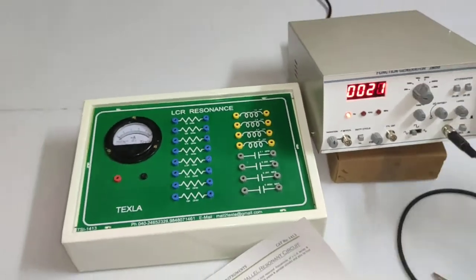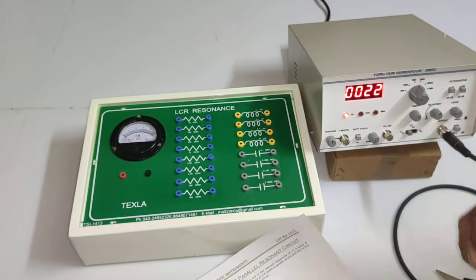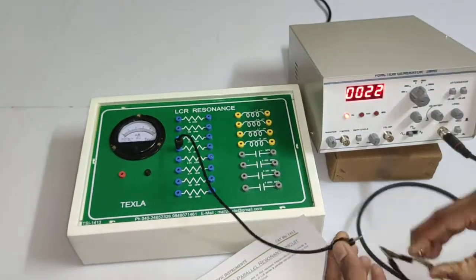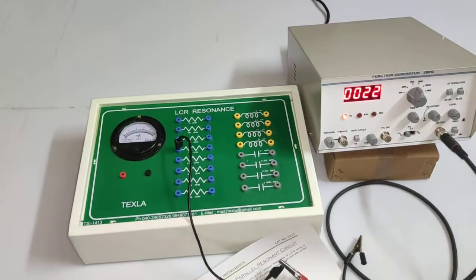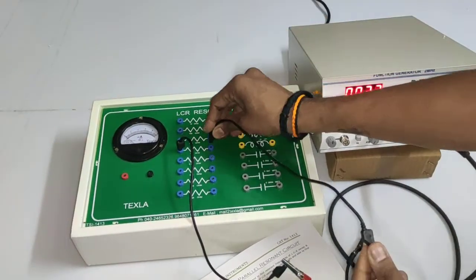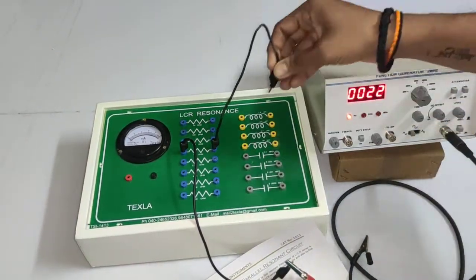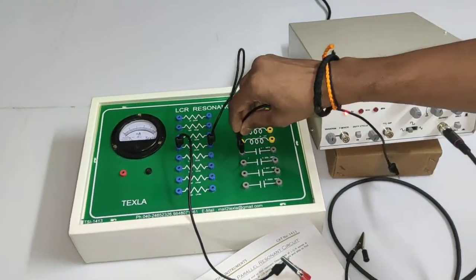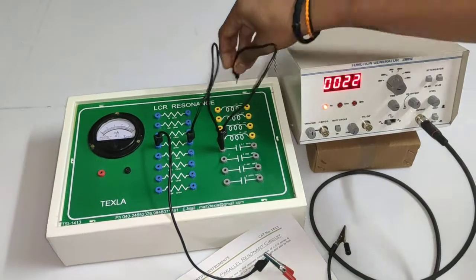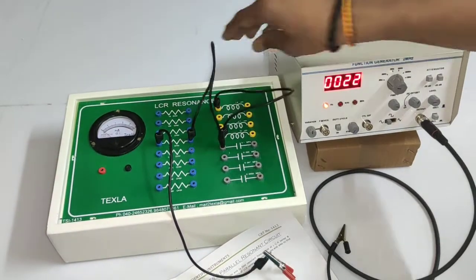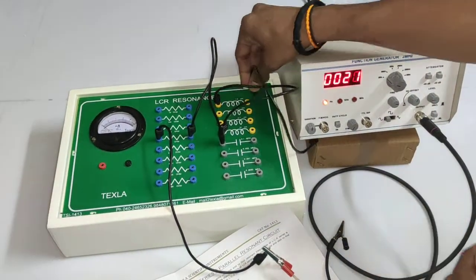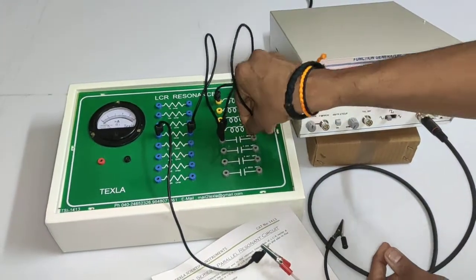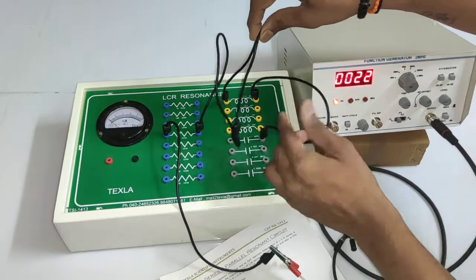So here from positive of the function generator to 1 kilo hertz, function positive is given, then it is given to parallel. So I am giving to capacitance, from here I am giving connection for inductance. So one connection is done, then same parallel connection should be done. So parallel connections are done, these two are parallel connections.